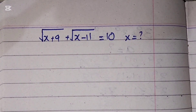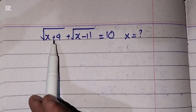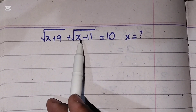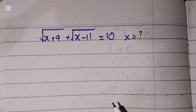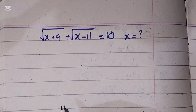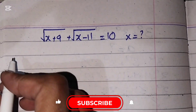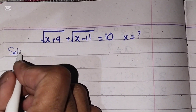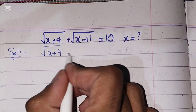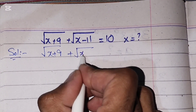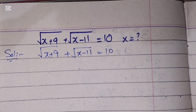Hi everyone, welcome to the new video. In this video we will solve a nice square root math problem: square root of (x + 9) plus square root of (x - 11) equals 10. We have to find the value of x. Before starting the solution, please like and subscribe to my channel.